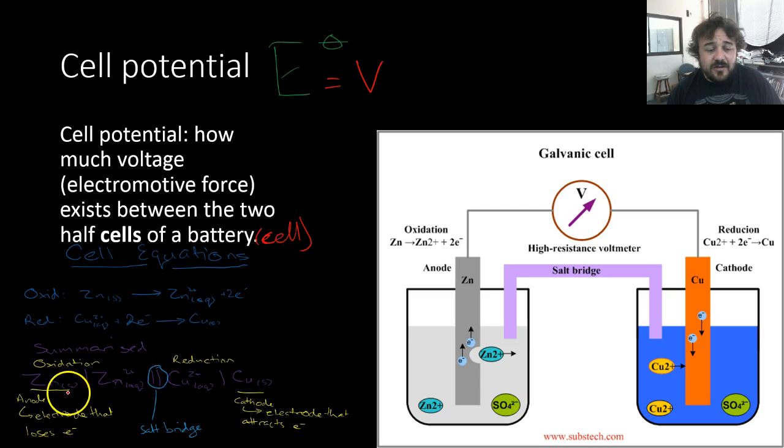Over here, we have our anode, which, for those of you who aren't sure, the anode is the electrode that loses electrons. The cathode, which is our cathode over here, is the electrode that attracts electrons. That is the chemistry definition. Okay, that's the definition we're going to use in chemistry. And this double line here, this represents the salt bridge.